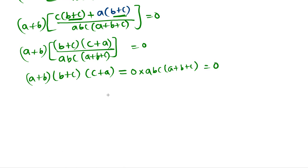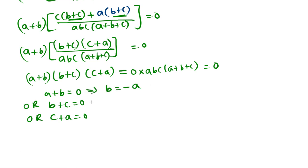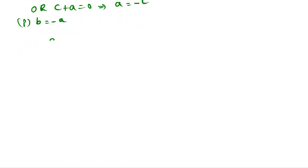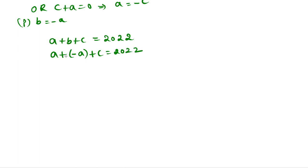Applying the zero product rule, we can say A plus B equals 0, or B plus C equals 0, or C plus A equals 0. That means B equals negative A, or C equals negative B, or A equals negative C. Let us take B equals negative A. Substituting into A plus B plus C equals 2022: A plus (negative A) plus C equals 2022, so A and minus A cancel, giving C equals 2022.